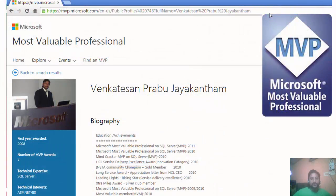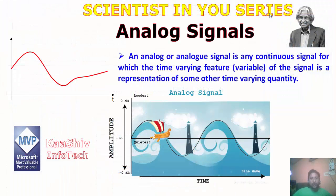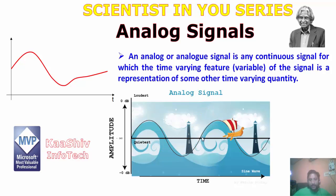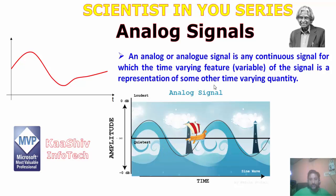Here is my Microsoft profile. Now, what are analog signals? Analog signals have no discrete values — they have continuous values. The continuous signal has time-varying features, and based on time, continuous changes in values happen for another parameter. The time-varying feature of the signal is a representation of some other time-varying quantity — that's your analog signal.